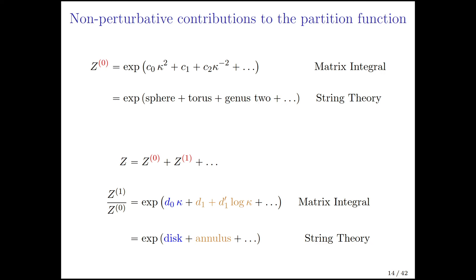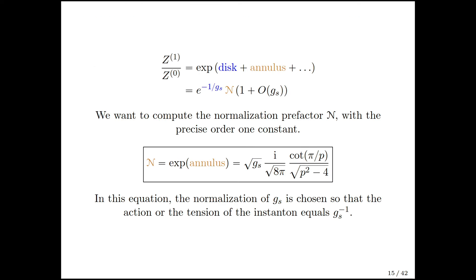Here z0 denotes the perturbative contribution. We can have non-perturbative contributions denoted by z1. We compute the ratio z1 over z0, which is the exponential of another series in kappa, but this time it starts at order kappa, not kappa squared, and has this d1 term and a log kappa term. On the string theory side, the kappa term is computed by the disk topology, and the brown terms are computed by the annulus. There's both a constant piece and a logarithmic piece in kappa. The exponential of disk can be written as e to the negative 1 over g string, the action of the D-brane or D-instanton. N is the exponential of the annulus diagram.